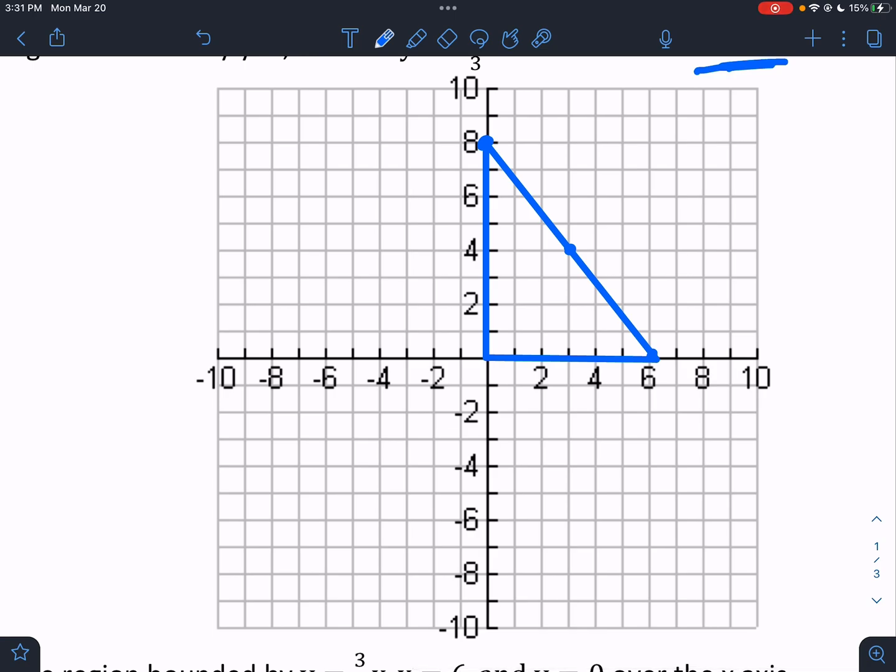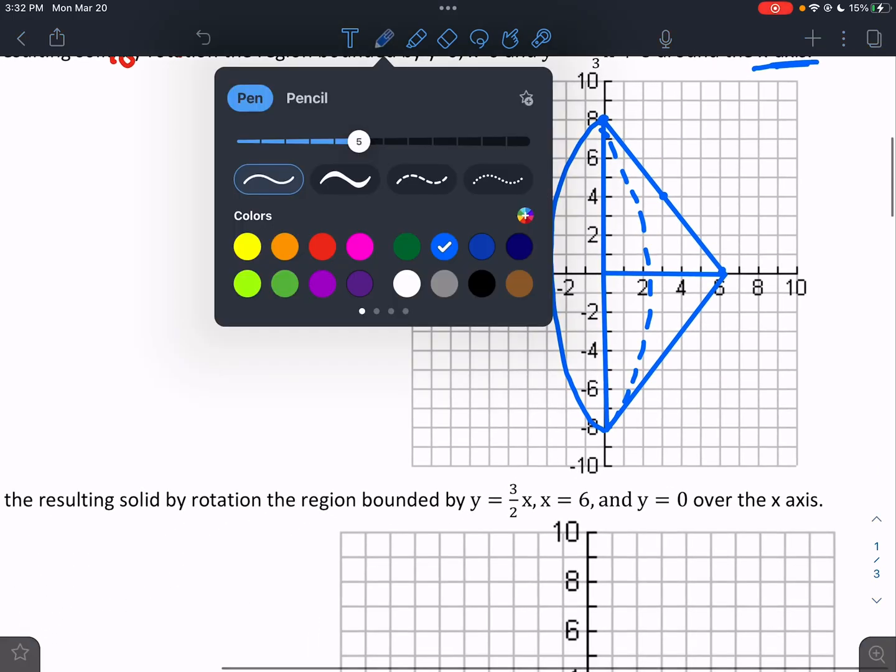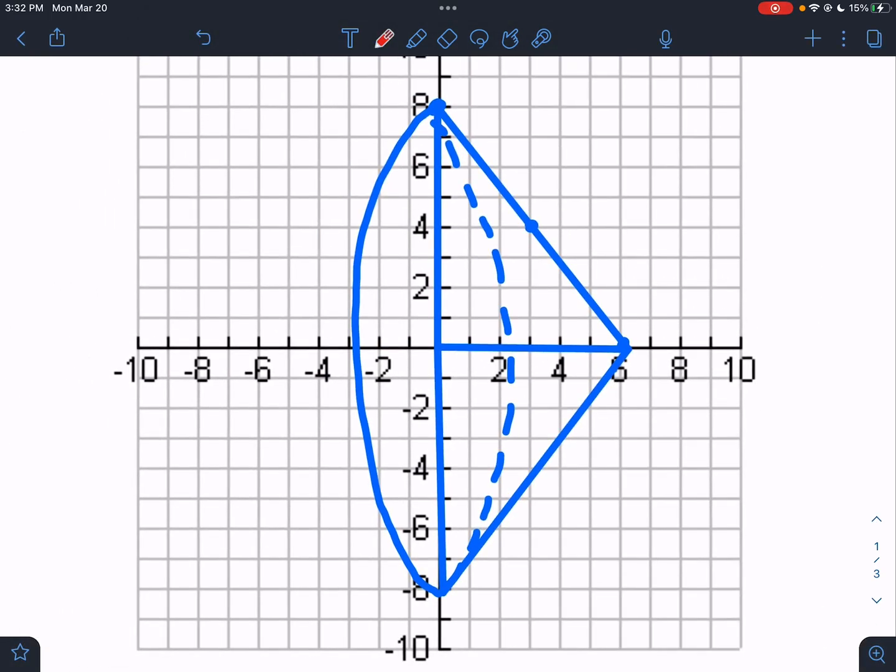So we're going to take this triangle and spin it around the x-axis. So to do that, I draw the reflection on the other side of the x-axis. And I connect the vertices with a circular motion. Now you'll notice that this cone is not upright.